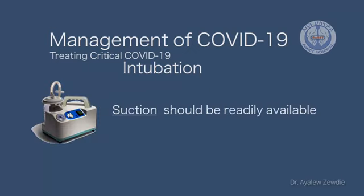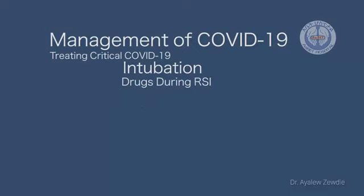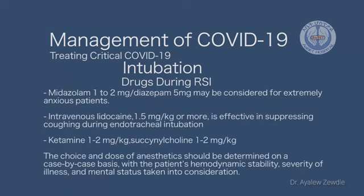If mask ventilation is really needed, cover the area around the patient's mouth and nose with gauze and perform a two-hand mask technique. Suction should be readily available. Fogging of goggles is a serious problem — cover the inner side with an anti-fogging agent such as transparent hand sanitizer. During RSI, midazolam or diazepam can be administered for patient control, and intravenous lidocaine can reduce coughing. The choice and dose of anesthetics should be determined case by case based on hemodynamic stability, severity of illness, and mental status. Ketamine 1–2 mg/kg and succinylcholine 1–2 mg/kg are most commonly used.